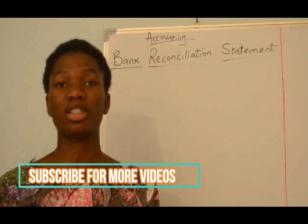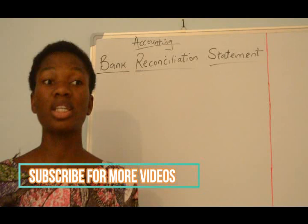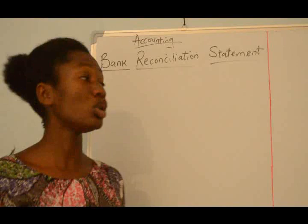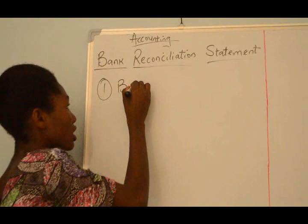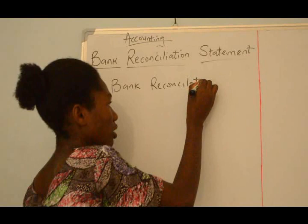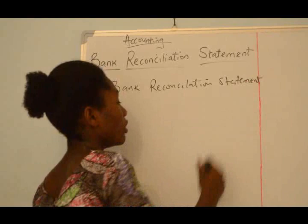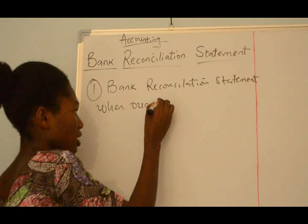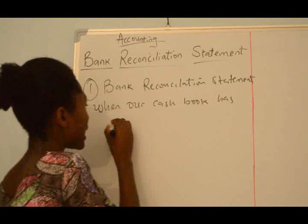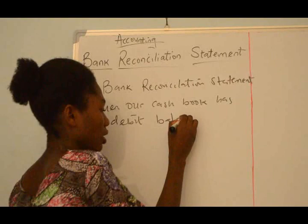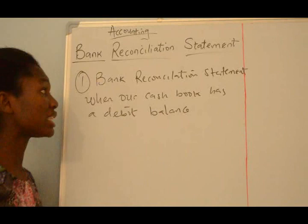Before we go into calculation, there are some things I will be telling you. In our Bank Reconciliation Statement, there are many aspects of the practicals that we look at. The first aspect is the Bank Reconciliation Statement when our Cashbook has a Debit Balance. This aspect I will be discussing today, and it also has two branches.